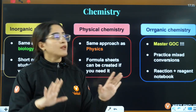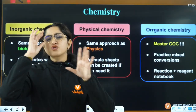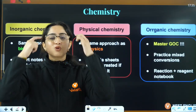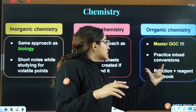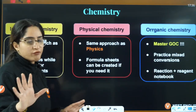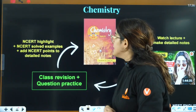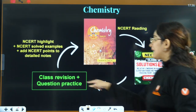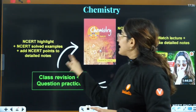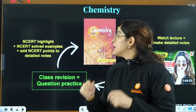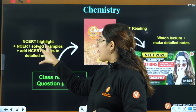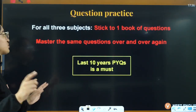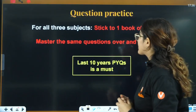For Organic chemistry, master GOC first, then start with Class 12 Organic chemistry. If GOC is not strong, you'll end up making many mistakes in the exam. Practice mixed conversions in NCERT — they have beautiful conversion sequences showing what steps are possible. Reaction and reagent notebooks will help you, along with named reactions and distinguished test reagent notebooks. The sequence for Chemistry is: watch lecture, make detailed notes, do class revision and question practice, then NCERT. For inorganic chemistry, combine your detailed notes with NCERT highlights and solved examples.